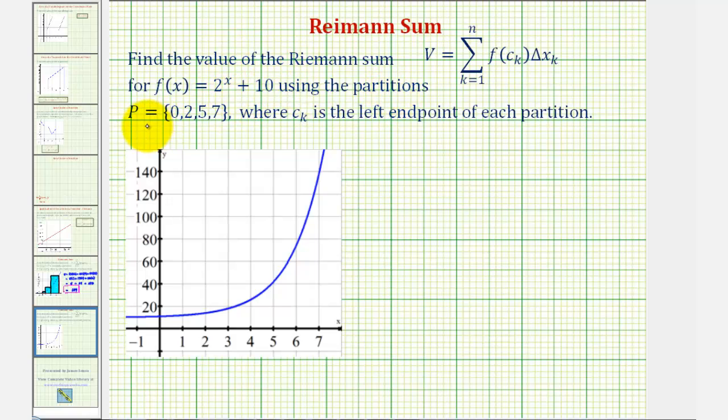using the partitions P = {0, 2, 5, 7}, where c_k, the input into the function, is the left endpoint of each partition.